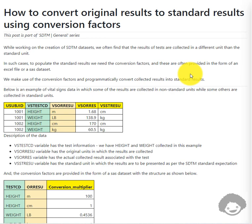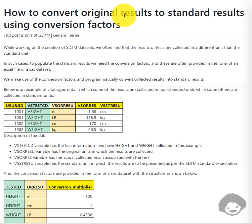In SDTM findings domains, results are present in two different formats: original results and standard results. When we do not have the standard results coming from the input dataset, we need to employ some algorithm or logic to derive the standard results using the original results and original result units. For each test there will be a standard result unit, and the collection may occur in the same unit as the standard or in different units, so we need to employ some logic to convert them.